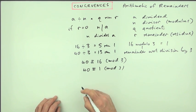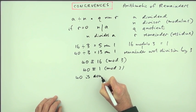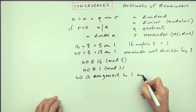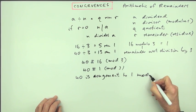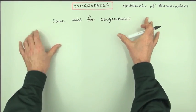So writing this out, this would be read as 40 is congruent to 1. Normally you just say mod, but it's actually modulo 3.